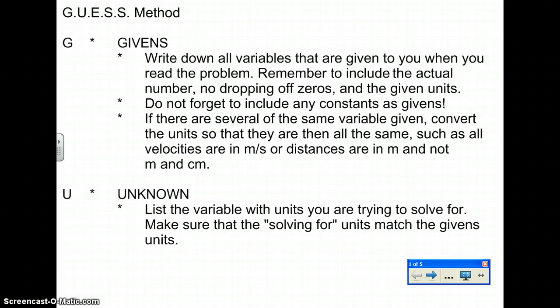Second letter is U. This U stands for the unknown. You read through the problem and the problem will ask you solve for, what would be, determine the. That's what you want to write down as your unknown. For your unknown, you want to list the variable with units you are trying to solve for. The problem may be very specific, solve for velocity in kilometers per hour, but the problem is given to you in meters per second.